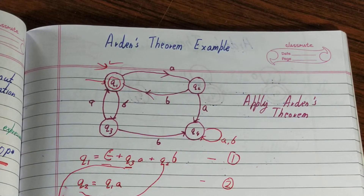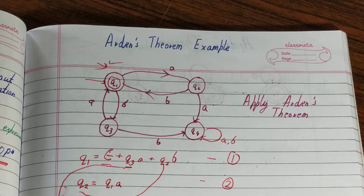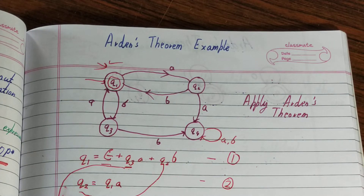The third thing we need to identify is the final state and the initial state. In this case, our initial state is q1 and our final state is also q1. Keep in mind that you need to extract a regular expression only for the final states. If you have two final states, you take out two regular expressions, and so on. Here we have only one, so we find the expression for q1 only.